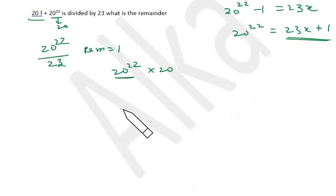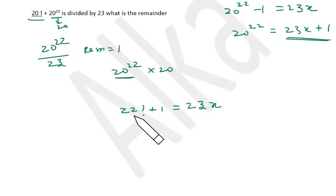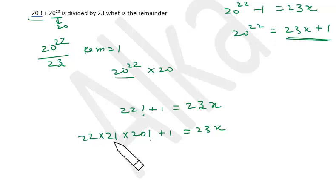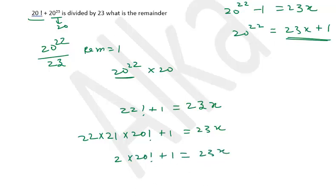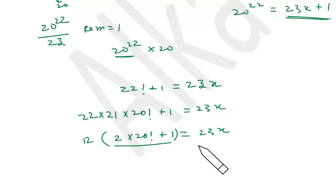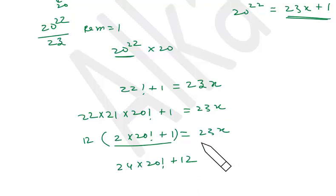22 factorial plus 1 is divisible by 23 — that's Wilson's theorem — so 22 factorial plus 1 equals 23x. Writing it as 22 into 21 into 20 factorial plus 1, it's still a multiple of 23. From 23, we get minus 1 and minus 2, so it becomes 2 into 20 factorial plus 1, which is also a multiple of 23. Since 12 times 2 is 24, which is 1 more than 23, I multiply by 12: 24 into 20 factorial plus 12 is a multiple of 23.